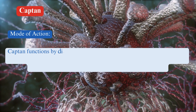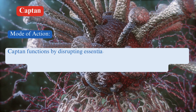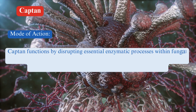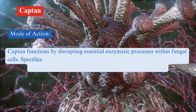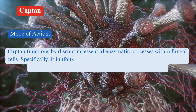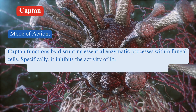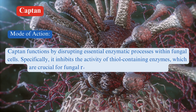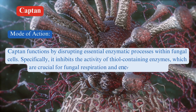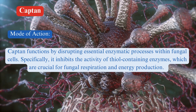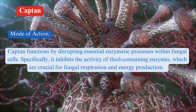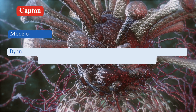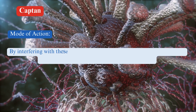Mode of action. Captan functions by disrupting essential enzymatic processes within fungal cells. Specifically, it inhibits the activity of thiol-containing enzymes, which are crucial for fungal respiration and energy production.